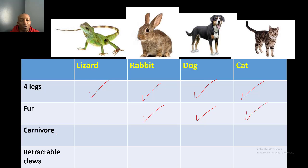Are they carnivores? That means do they eat meat in order to survive. Lizards? No. Rabbits? No. But dogs? Yes. And cats? Yes. And then retractable claws — that means they can extend their claws out and then pull them back in. Lizards? No. Rabbits? No. Dogs? No. But cats? Yes.